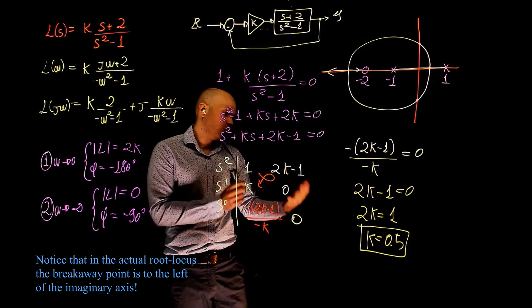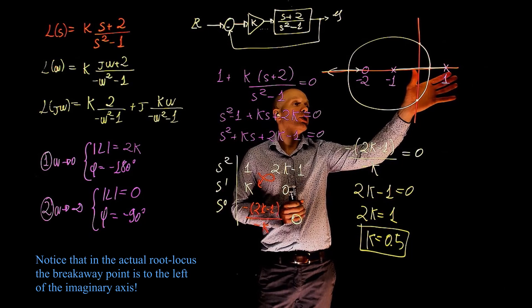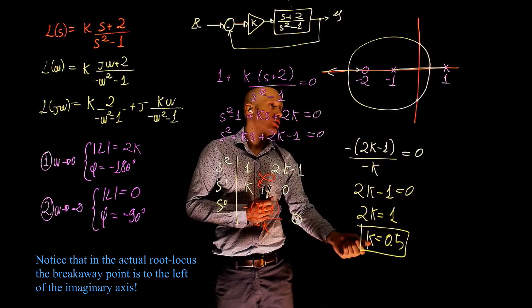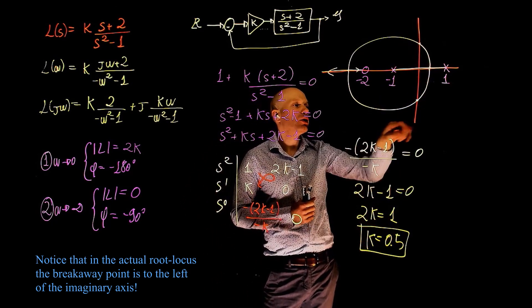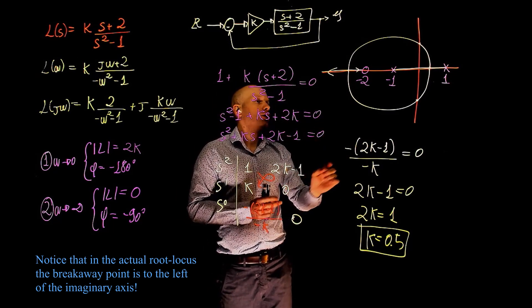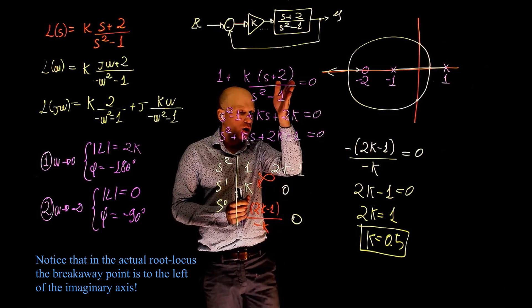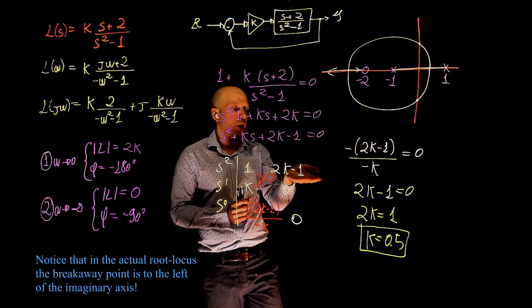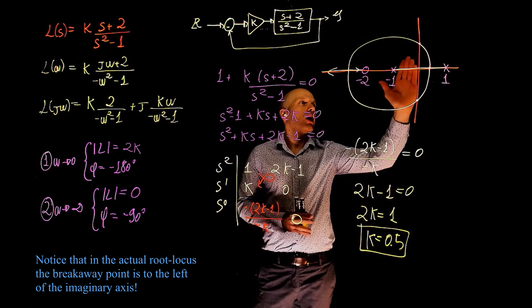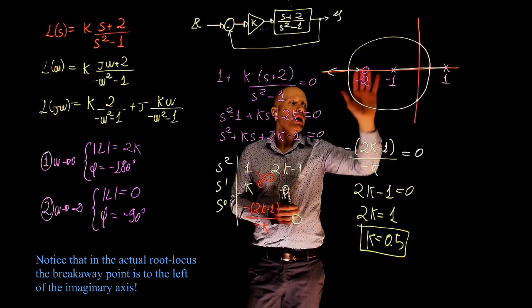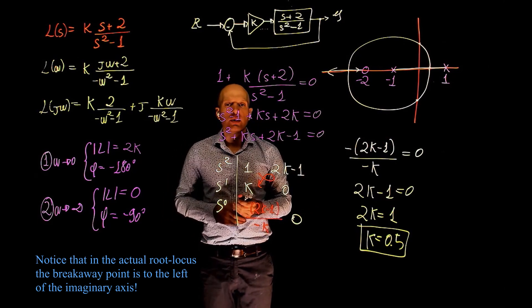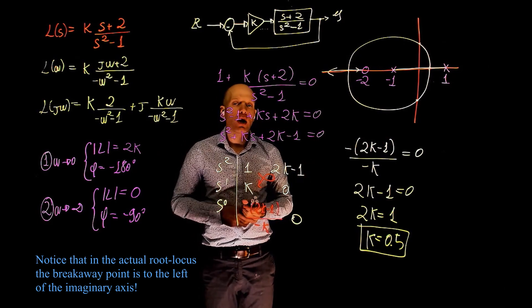When k ≤ 0.5, the system is closed-loop unstable. When k = 0.5, the poles lie on the imaginary axis — in the Nyquist plot, the curve touches exactly −1. For k > 0.5, the system is in the stable region: the Nyquist plot encircles −1 in the counterclockwise direction and the closed-loop system becomes stable.